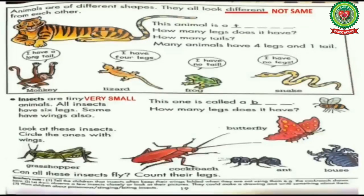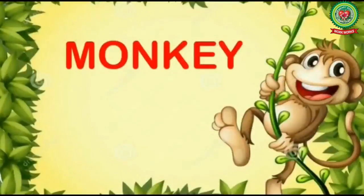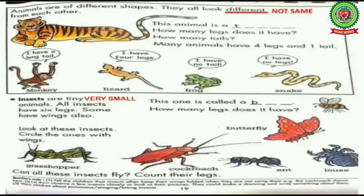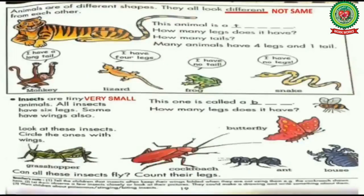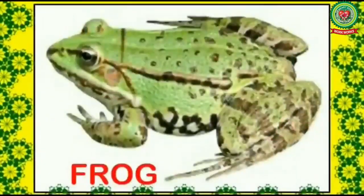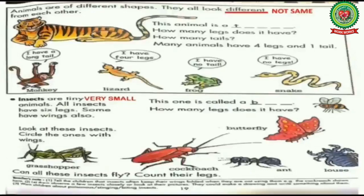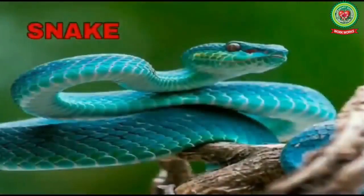The book says: 'I have a long tail' — it is a monkey that lives in a tree. 'I have four legs' — it is a lizard, a reptile you might have seen on walls. 'I have no tail' — it is a frog, which you can easily see in the rainy season. 'I have no legs' — it is a snake, also a reptile.